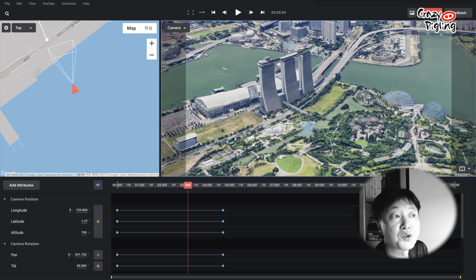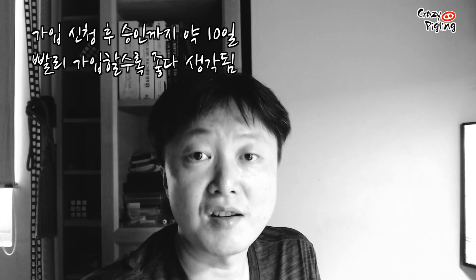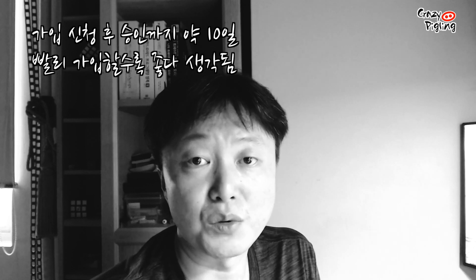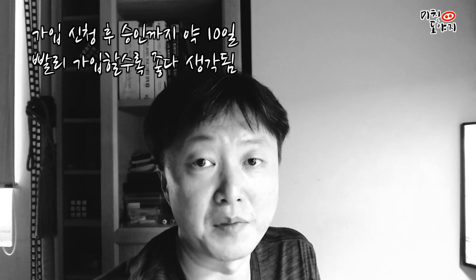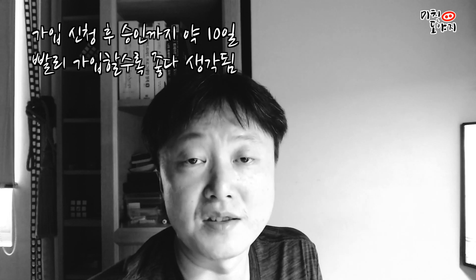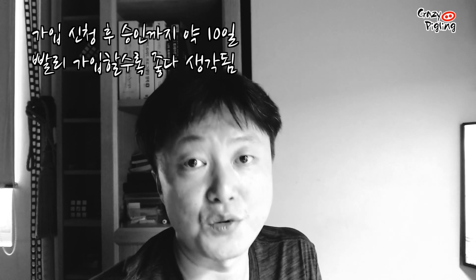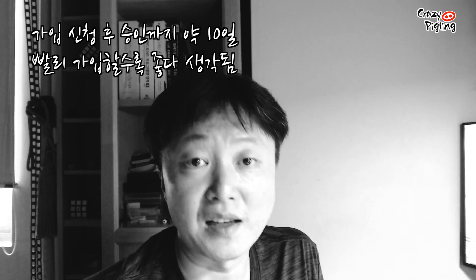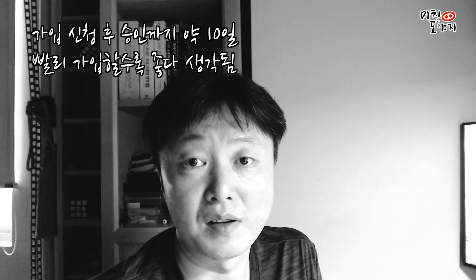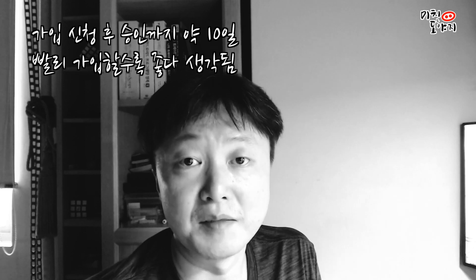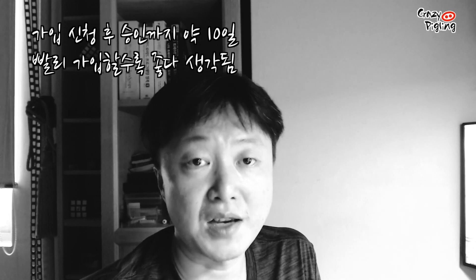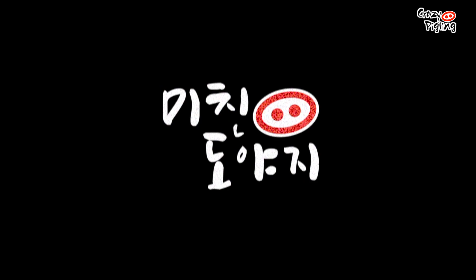The first thing is to use Google Earth Studio. A Google ID is required to sign up. After submitting the application, you wait about 8 days for Google's approval email. Once approved, you can start using it. It's best to sign up right now — even if you don't need it immediately, so you're ready when you do.